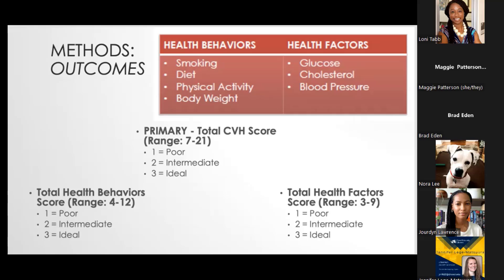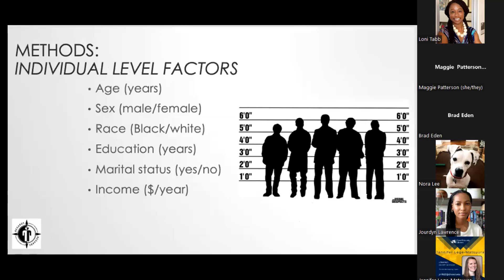In a secondary analysis, I also looked at total health behavior scores focused on modifiable things, and health factor scores focused on the biological. At the individual level, typical predictors of cardiovascular health include age, sex, race, education, marital status, and income — all individual level metrics shown to have an impact on predicting cardiovascular health.